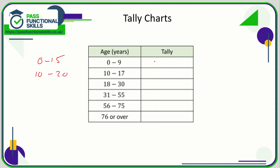As each member of the public comes through the turnstiles at the football match and I ask how old they are — if that person says 16, I'll do a tally mark; the next person says 32, I'll do a tally mark. Once I've built up four in one category, the next one will be a diagonal strike, because we group them in batches of five. It's much easier to count 5, 10, 12 than to count individually from one to twelve. So when we do tally charts, we batch them into groups of five.